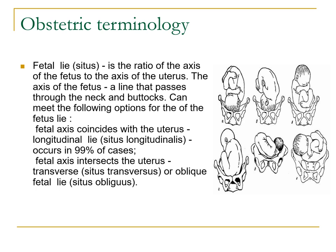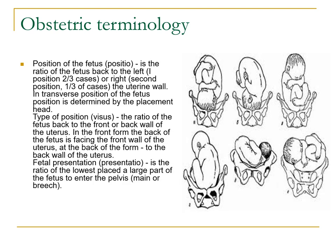Your fetal lie is the ratio of the axis of the fetus to the axis of the uterus. The axis of the fetus is a line that passes through the neck and buttocks. Options for fetal lie: when the fetal axis coincides with the uterus, it is longitudinal lie, occurring in 99% of cases — this is your cephalic presentation. When the fetal axis intersects the uterus, it is transverse (situs transversus) or oblique fetal lie, occurring in 1% of cases. Position of the fetus is the ratio of the fetal back to the left (2/3 of the time) or to the right (1/3 of cases) uterine wall. In transverse position, position is determined by the placement of the head. Type of position is the ratio of the fetal back to the front or back wall of the uterus.